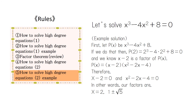Let's solve the equation x cubed minus four x squared plus eight equals zero. First, let p(x) equal x cubed minus four x squared plus eight. If we do that, then p(2) ends up equaling zero. From the factor theorem, we know that (x minus two) is a factor. Therefore, p(x) can be factorized as (x minus two) times (x squared minus two x minus four).